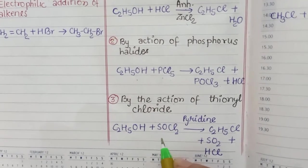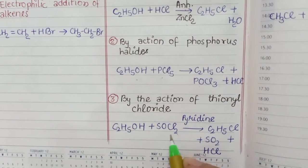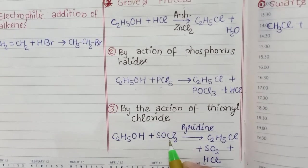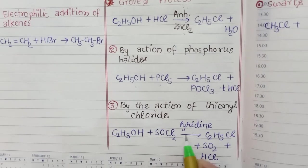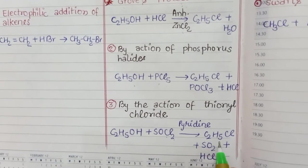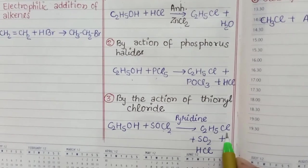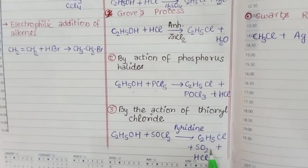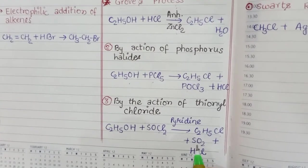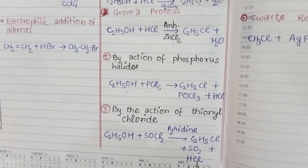Next, by the action of thionyl chloride, when ethyl alcohol reacts with thionyl chloride SOCl2 in the presence of pyridine to form ethyl chloride. This is a haloalkane, and SO2 gas and HCl.